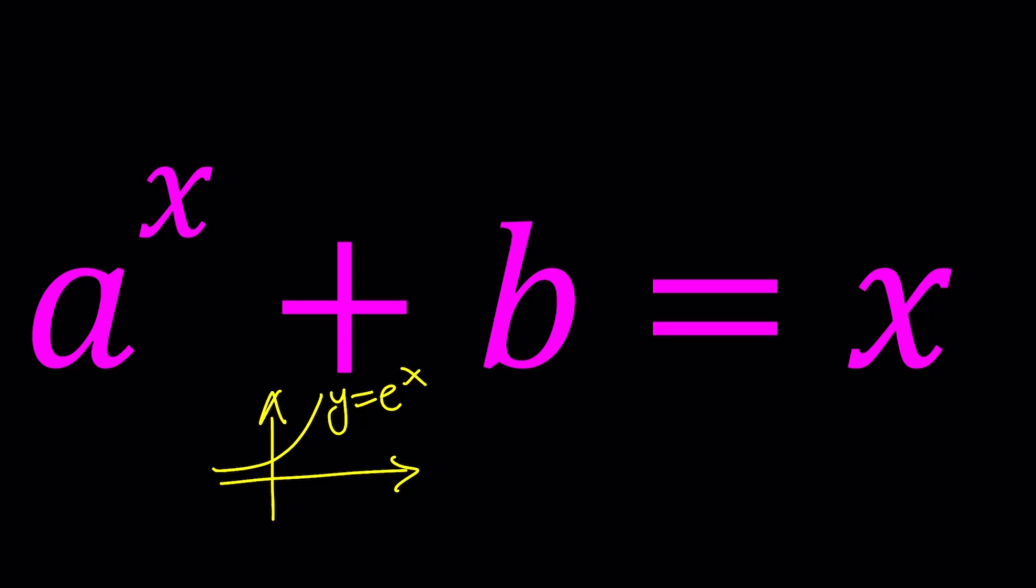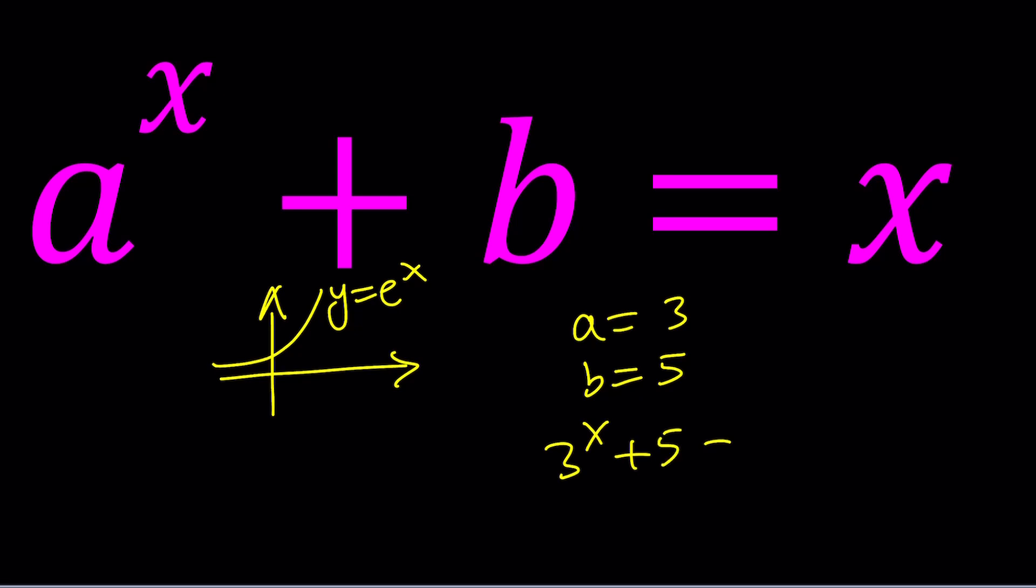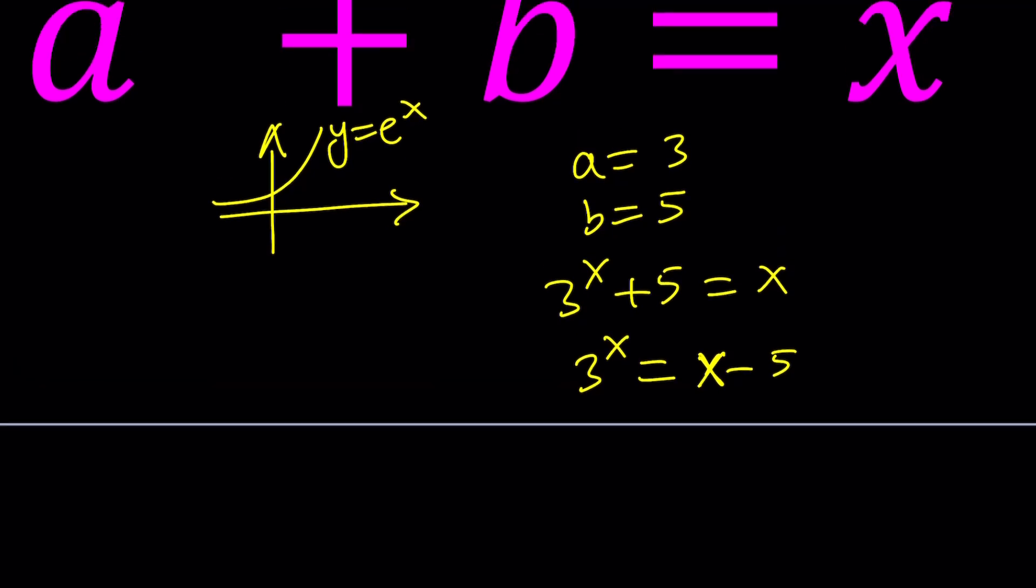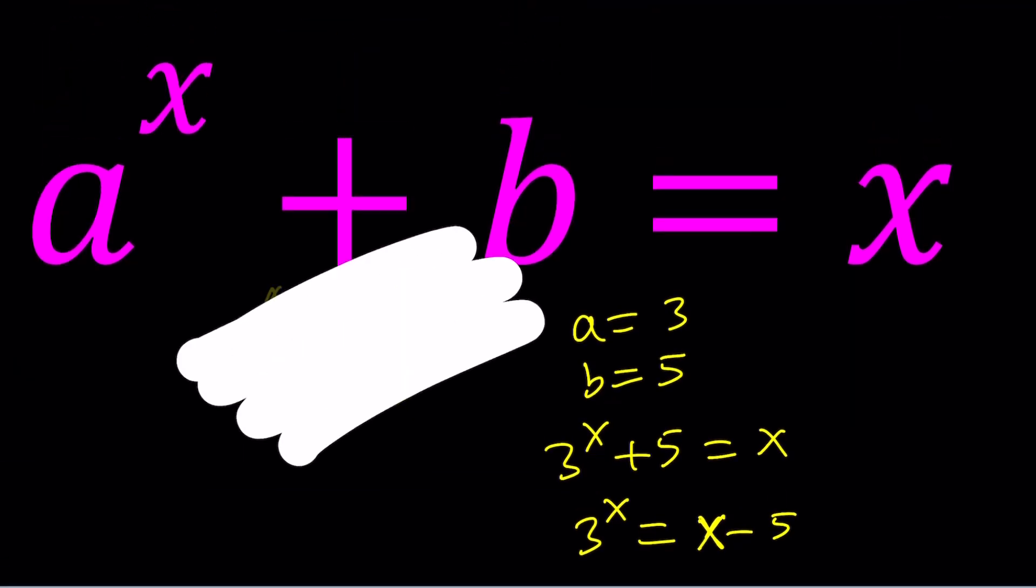And then we're adding a b to it. Obviously, b does not have to be positive here. And we're getting x. So let's see how we can handle this problem in the general case because this is actually going to help you solve a lot of problems where you can replace a and b with numbers. Such as if a is equal to 3 and b is equal to 5, this just becomes 3 to the power x plus 5 equals x, or you can write it as 3 to the x equals x minus 5. Obviously, you can regard this as the intersection point of these two curves. Well, I guess one of them is a linear function. Anyways, let's see how we can handle this for the general case.